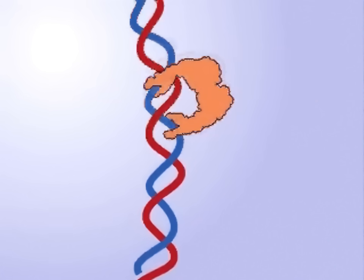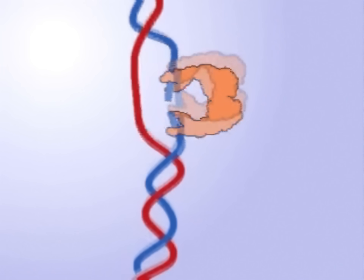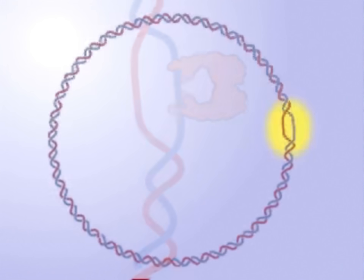Topoisomerase I enzymes cut a single strand of the double helix, pass the other strand through the cut, and reseal the break, relaxing the overwound molecule, which now has one fewer twist.